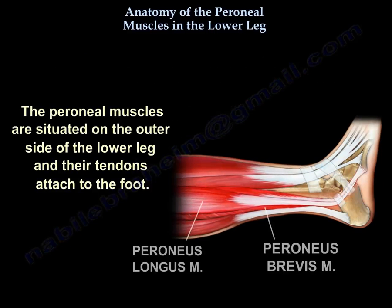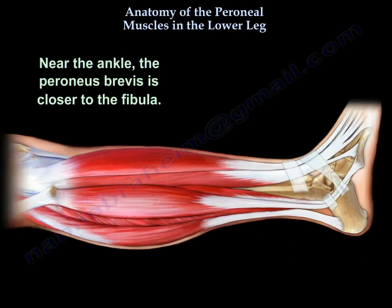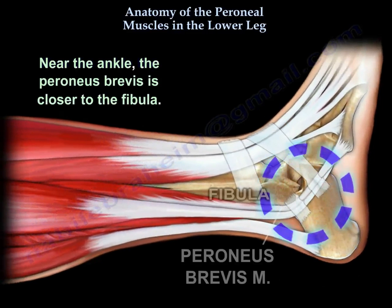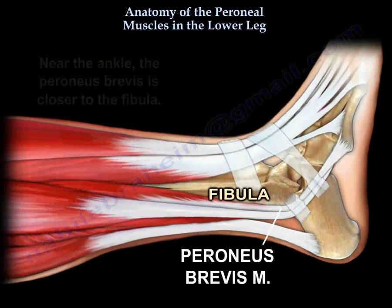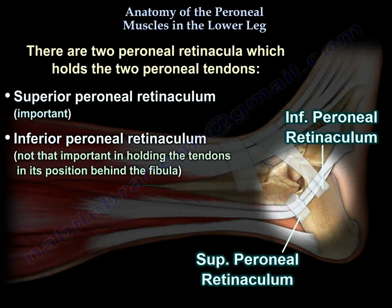The perineal muscles are situated on the outer side of the lower leg, with the tendons attached to the foot. Near the ankle, the perineus brevis is closer to the fibula. There are two perineal retinacula which hold the two perineal tendons: the superior perineal retinaculum, which is the important one, and the inferior perineal retinaculum, which is not as important in holding the tendons in position behind the fibula.